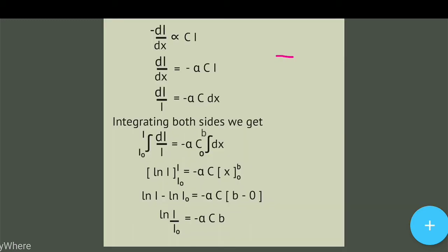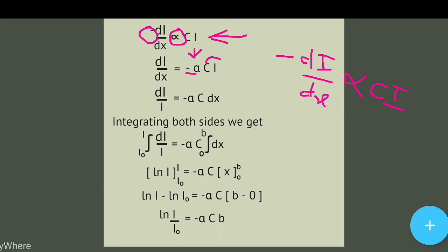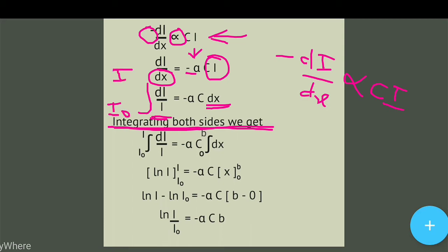यहाँ पर -dI/dx जो है वो proportional होता है concentration और intensity से — यह है हमारा Beer-Lambert Law। जब हम proportionality को हटाएंगे तब हम constant alpha का use करेंगे, और जो minus sign है उसका side change किया है। फिर I को नीचे लेके जाएंगे और dx को उपर लाएंगे, फिर दोनों side को integrate करना है। Initial intensity होगा I₀ और final intensity होगा I — this is constant, this is concentration।